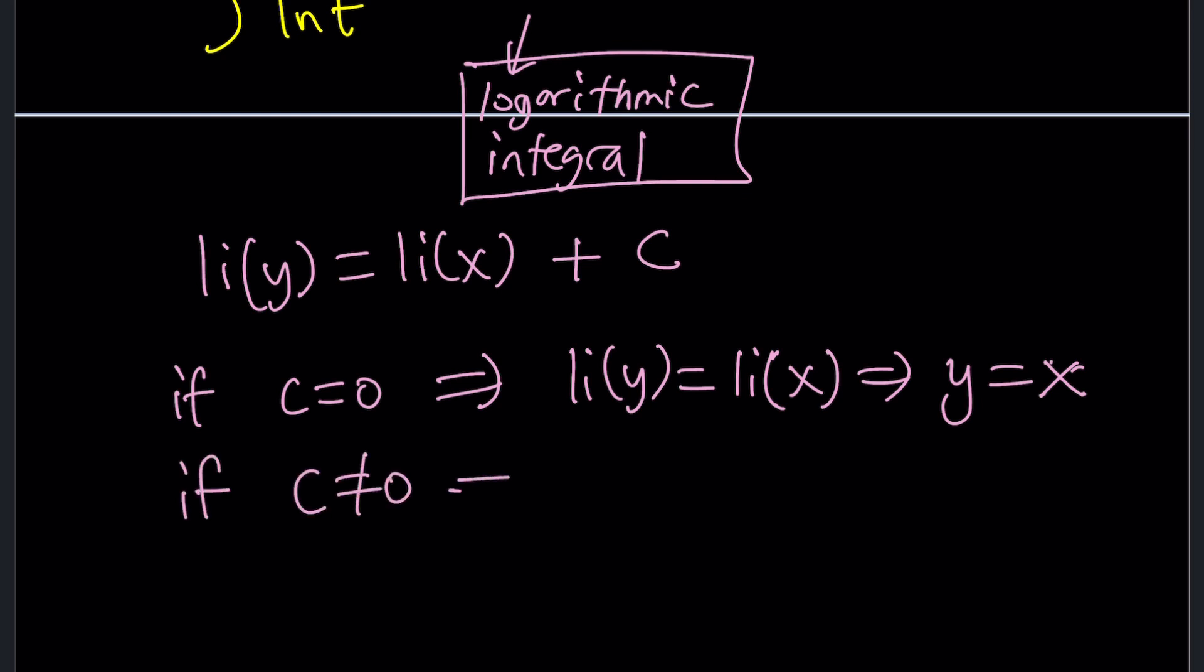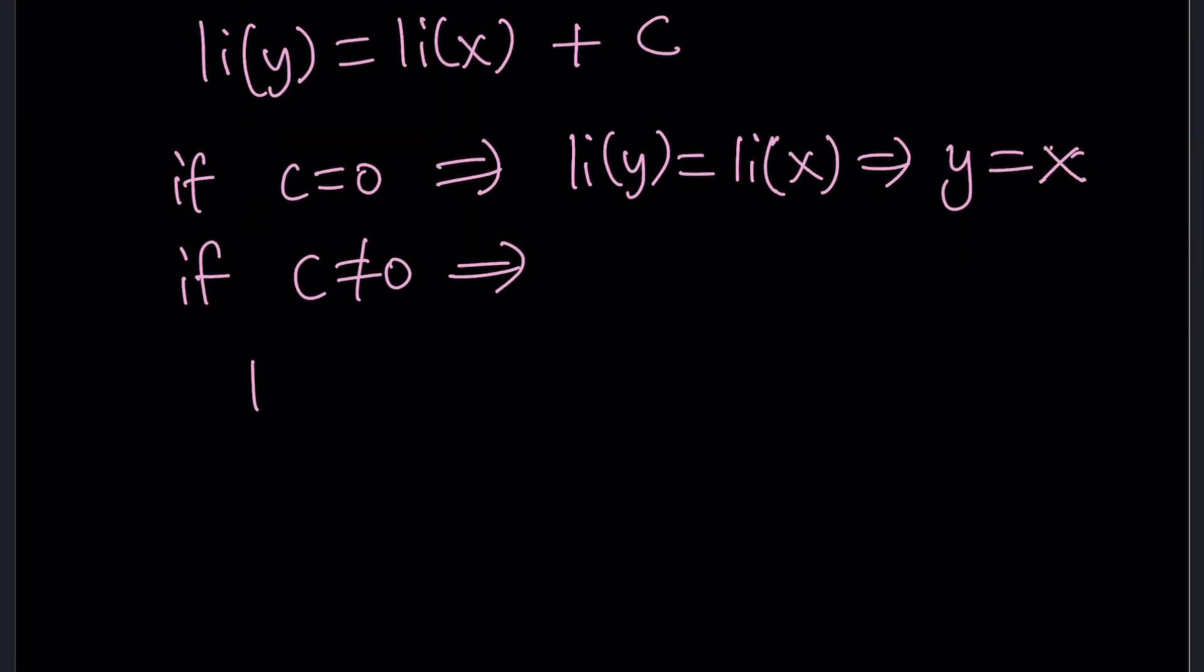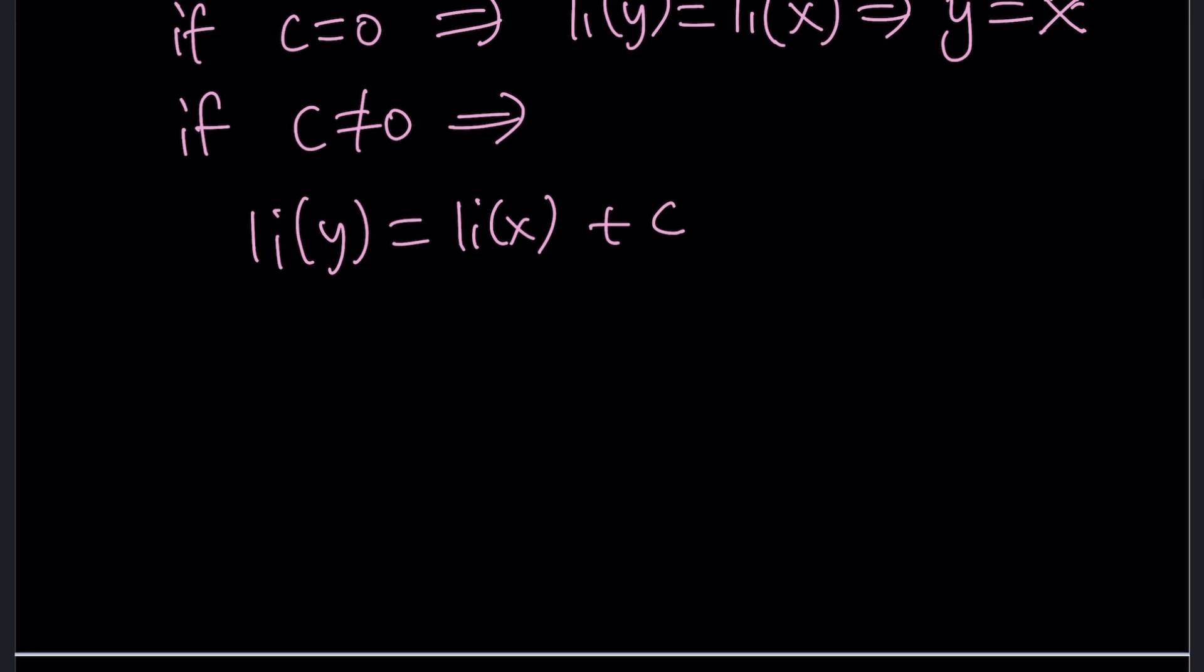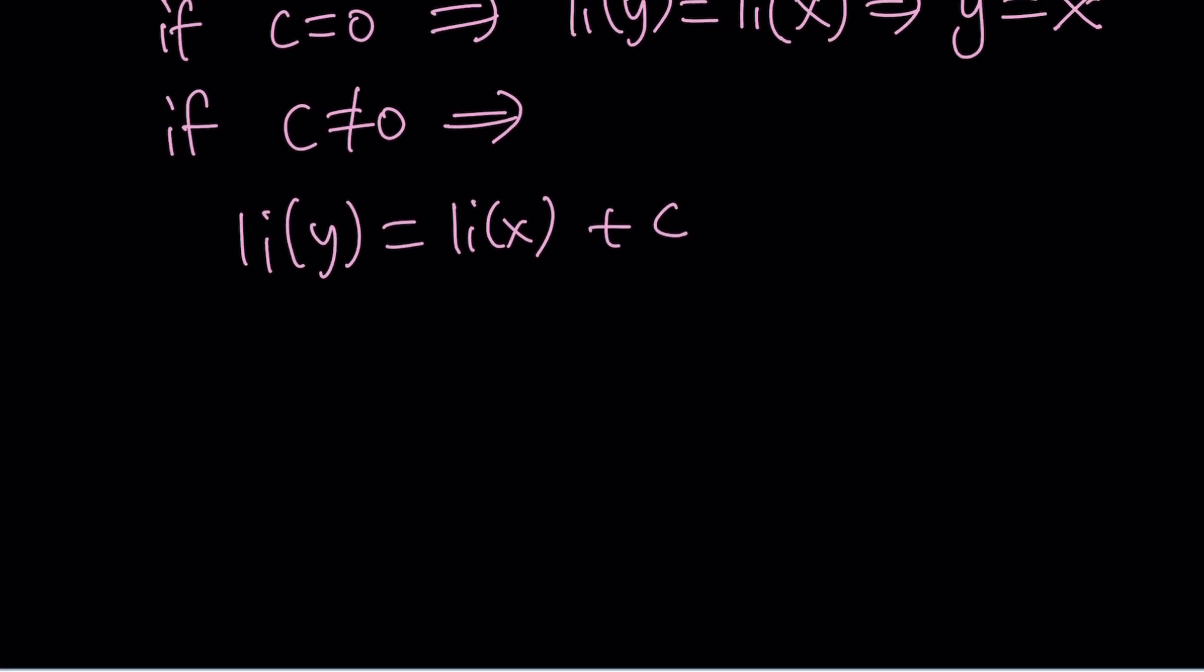Okay, let's go ahead and take a look at that case now. So we have li of y equals li of x plus a non-zero constant. Now, we do need to do the following to both sides. You know what that's called? That is called the inverse li. What does that mean?